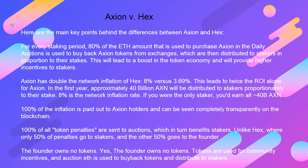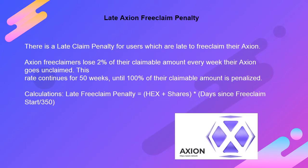The founder owns no tokens — yes, the founder owns no tokens. Tokens are used for community incentives, and auction ETH is used to buy back tokens and distribute to stakers. There is a late claim penalty for users who are late to free claim their Axion. Axion free claimers lose 2% of their claimable amount every week their Axion goes unclaimed. This rate continues for 50 weeks, until 100% of their claimable amount is penalized. Late Free Claim Penalty = HEX shares × days since free claim start ÷ 350.